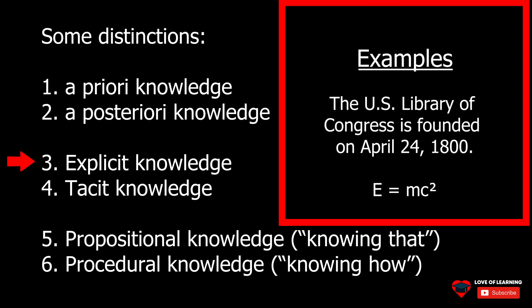Explicit knowledge can be documented, transmitted, and most importantly, learned by outsiders. It can be communicated easily to others and is stored in documents, libraries, books, video tutorials, white papers, and other forms of verbal or written communication.